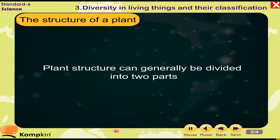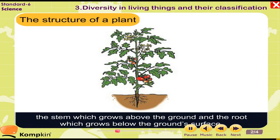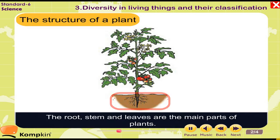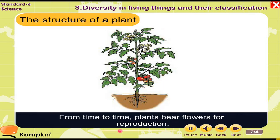The structure of a plant: Plant structure can generally be divided into two parts — the stem, which grows above the ground, and the root, which grows below the ground surface. The root, stem, and leaves are the main parts of plants.